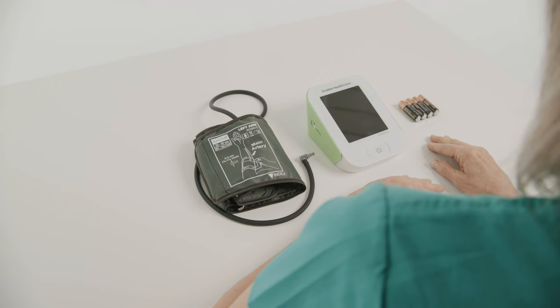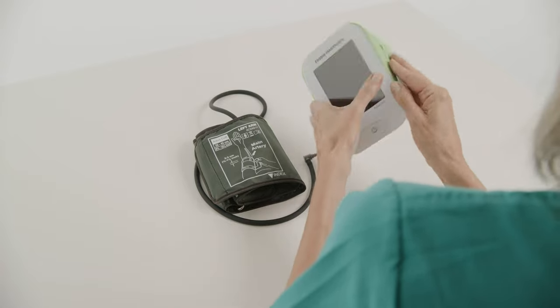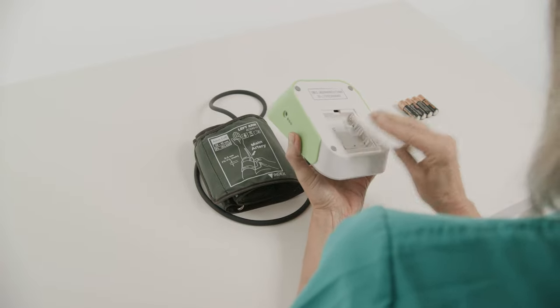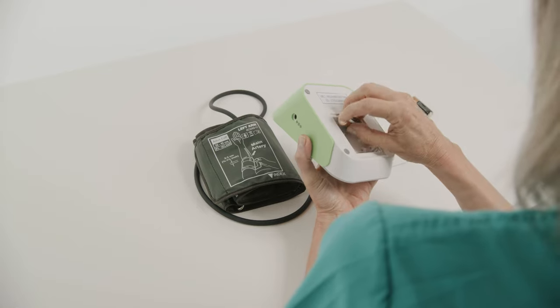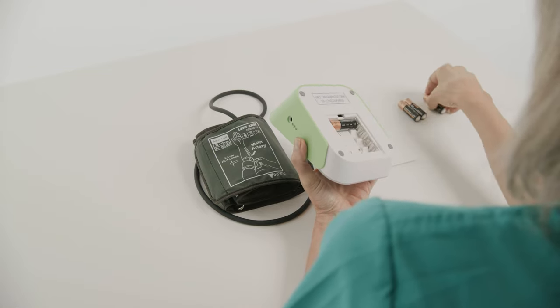When you first receive your device, you'll need to remove the blood pressure device from the box and place the provided four AA batteries into the compartment on the back of the device if it isn't already done so.